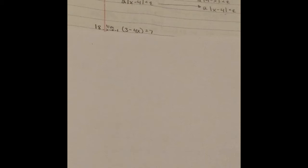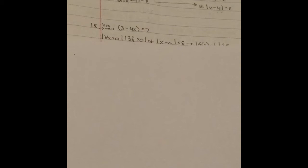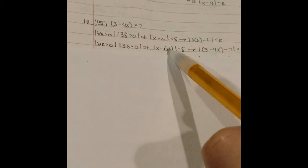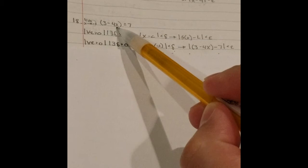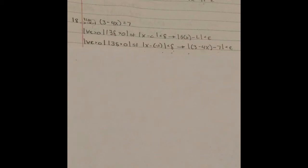Step 2 is always the same — plug in your values. c is negative 1, so we have x minus negative 1 less than delta. f(x) is 3 minus 4x, and L is 7. So 3 minus 4x minus 7 less than epsilon. Cleaning up the right-hand side: 3 minus 4x minus 7 is negative 4 minus 4x, which factors as negative 4 times the quantity x plus 1. The absolute value of negative 4 is positive 4, giving us 4 times x minus c.